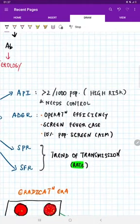Let us now see the important points for that. Annual Plasmodium index says if it is more than two per thousand population, that means it is a high-risk area. It needs control. ABER...